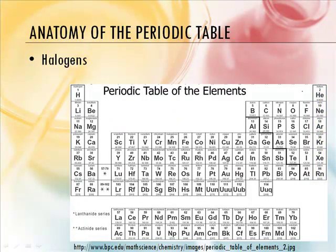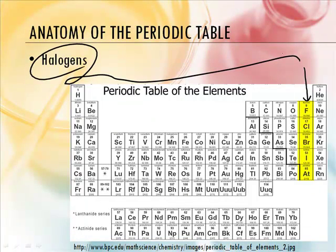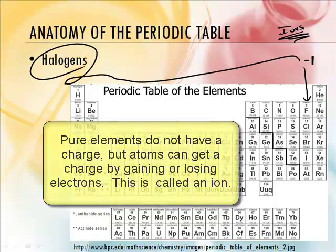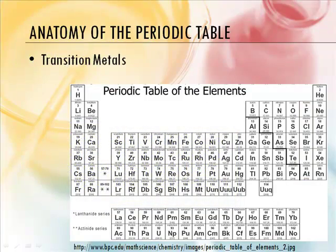What about halogens? Halogens is the second to the last column, and their charge is negative one — go ahead and write that up there. Now, when we say charges, we should point out that as pure elements they don't have a charge, but when they form ions, that's when they get those particular charges. Make sure you're pausing the video to write these things down and label your periodic table.